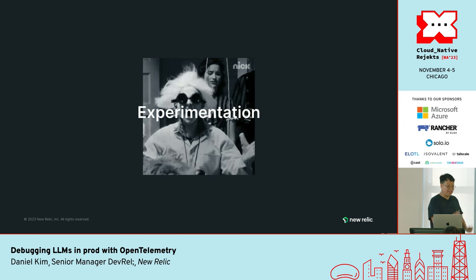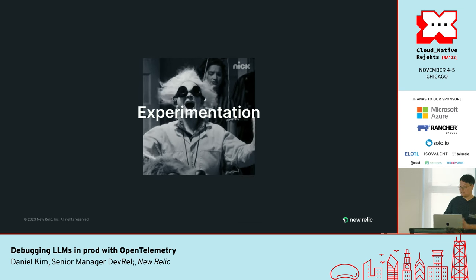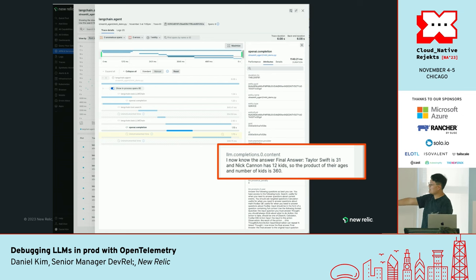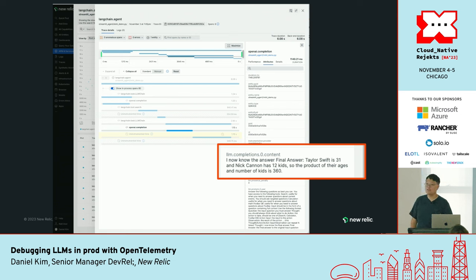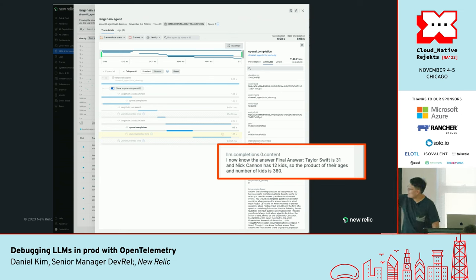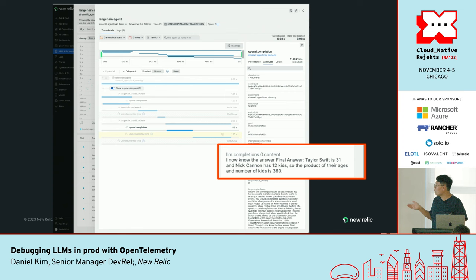Now comes the fun part. This is all table stakes — things you can do out of the box right after you start reporting data. But here are some of the more fun things you can do, like experimentation. Here is a specific query that went wrong. This is a specific response from OpenAI — it says: I now know the answer. Taylor Swift is 31 and Nick Cannon has 12 kids, so the product of their ages and number of kids is 360. That is wrong. But it's very confidently wrong. If you see in the trace, there's no mention of a calculator tool — even though I gave it the ability to do math, because OpenAI thinks it can still do math. So what can you do when something like this happens? Prompt engineering.